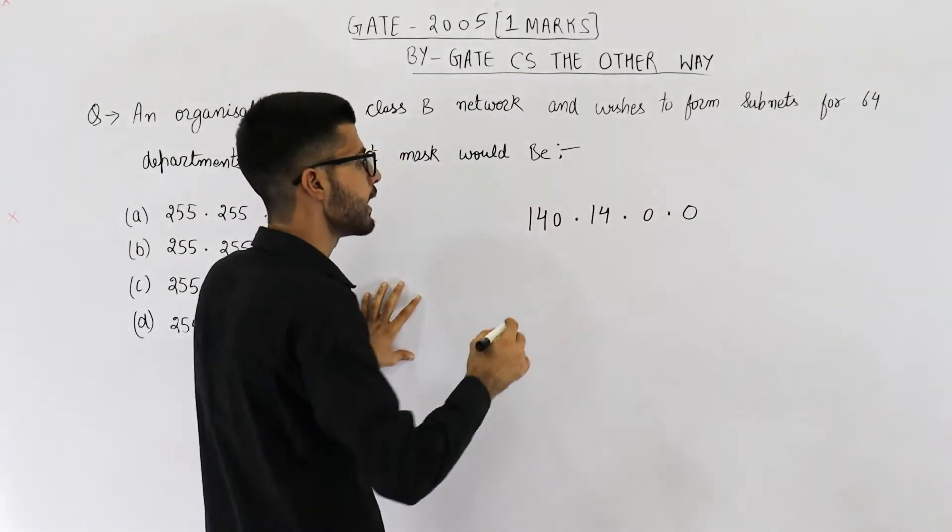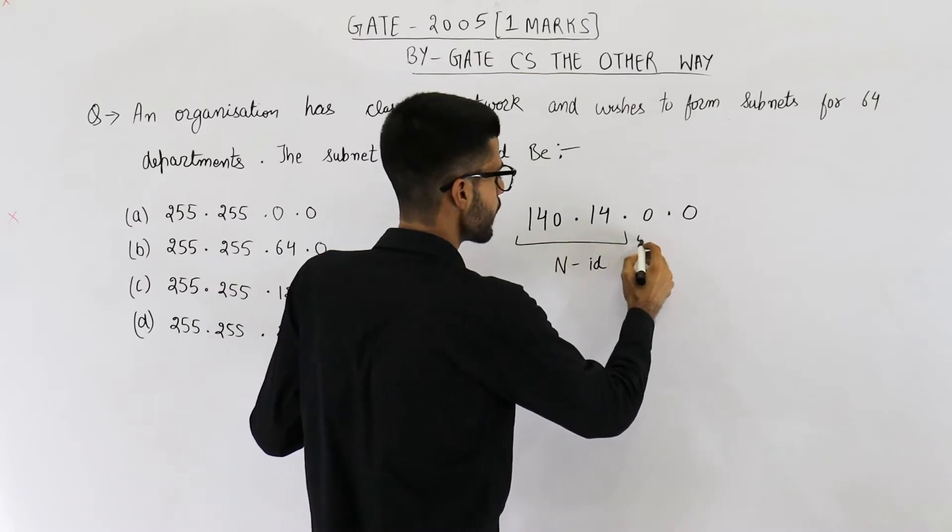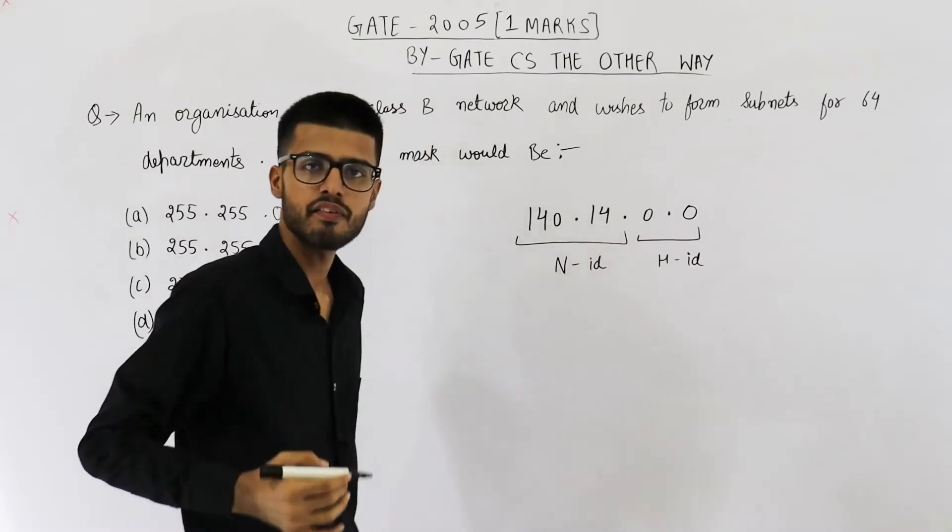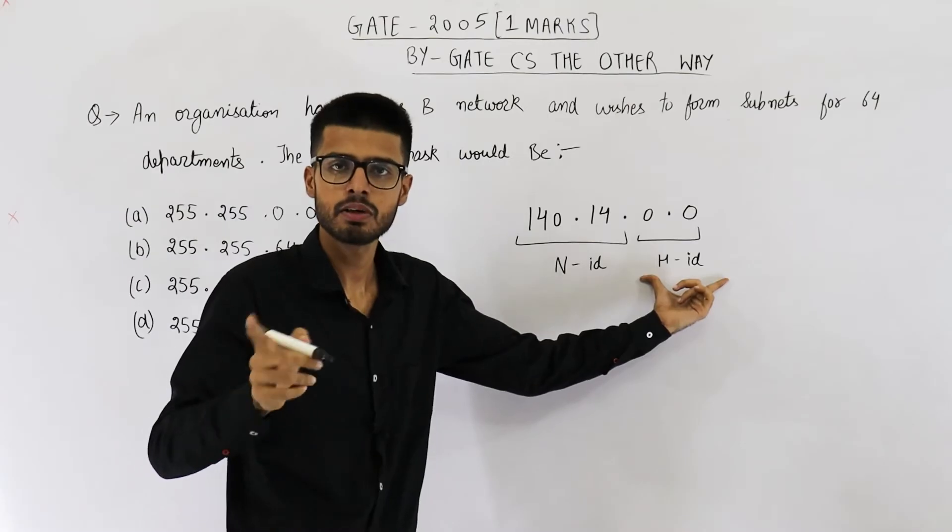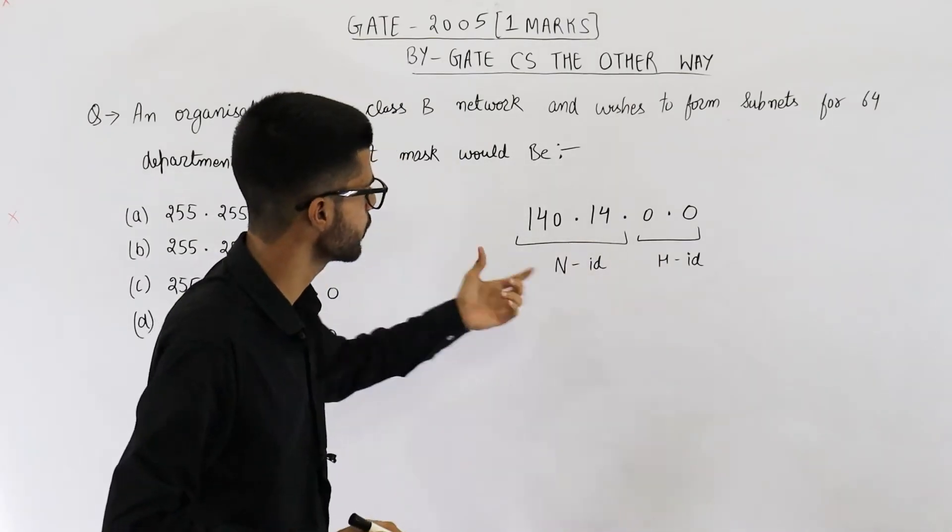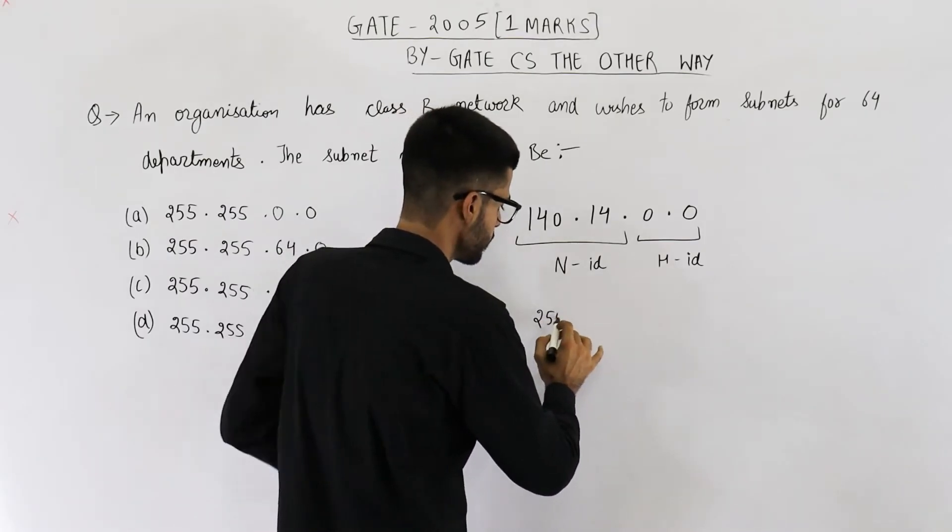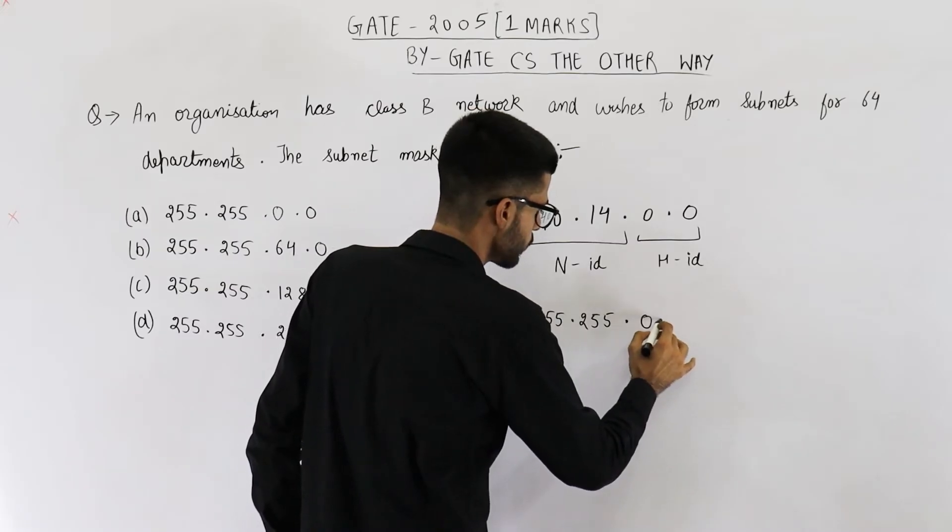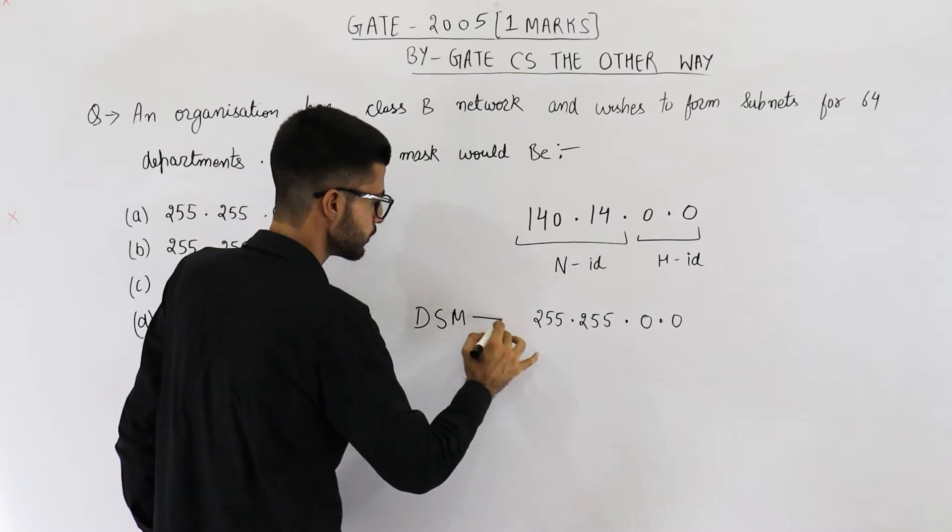Now what will be the network ID part? It is the first 16 bits because this is class B, and this is host ID. What will be the default subnet mask? First 16 bits will be one, next 16 bits will be zero for the subnet mask, because 16 bits represent the network ID. That means 255.255.0.0. So this is the default subnet mask.